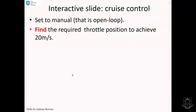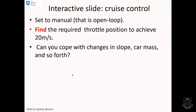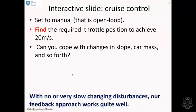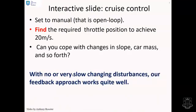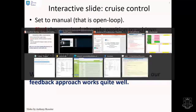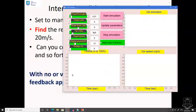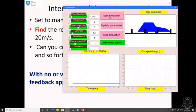Next one, cruise control. What would you do with your throttle to achieve 20 meters per second? Can you cope with changes in slope and car mass and so forth? Again, what you'll see is that with no or very slow changing disturbances, the human approach to feedback is pretty effective.